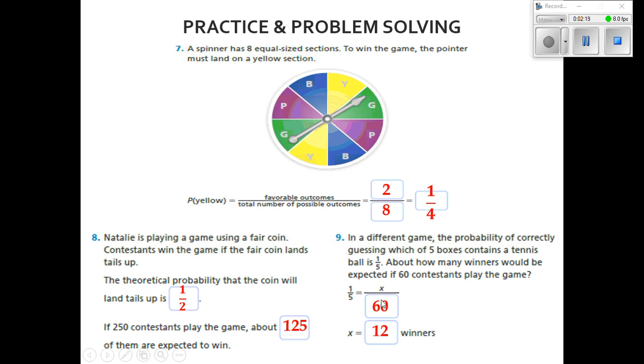Now remember, we've got to multiply 60 to this side to get rid of 60. Whatever I multiply to one side, I do to the other. That's 1 times 60, which is 60, and 60 divided by 5 is 12. So we can expect 12 winners.